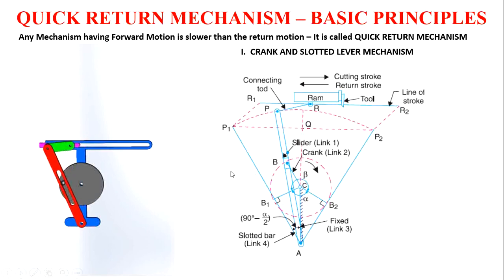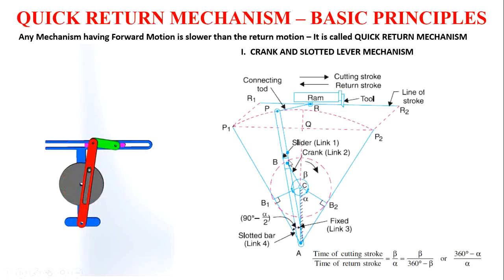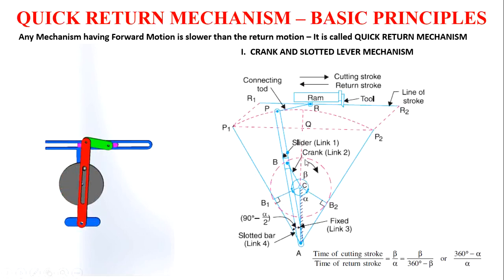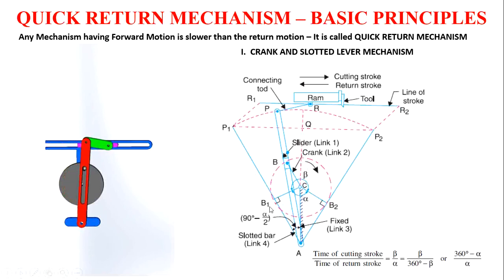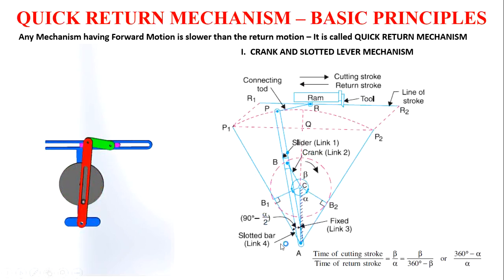In this crank and slotted lever mechanism, the time ratio is: time of cutting stroke to time of return stroke equals beta by alpha. If we are running this with a constant velocity, beta is the angle turned during forward movement and alpha is the angle turned during return movement. Over a full 360-degree rotation, the higher angle corresponds to the forward stroke and the lower angle to the return stroke, so automatically the return stroke will have a faster movement.